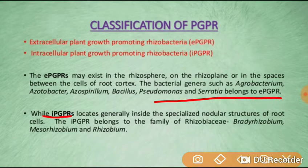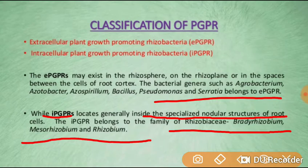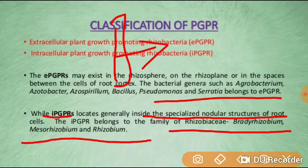Intracellular plant growth promoting rhizobacteria reside inside the specialized nodular structures of root cells. The intracellular PGPR belongs to the family Rhizobiaceae, including Bradyrhizobium, Mesorhizobium, and Rhizobium. These are present inside the special nodular structures of root cells.